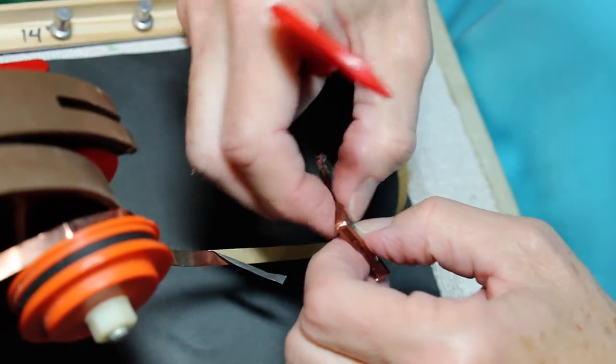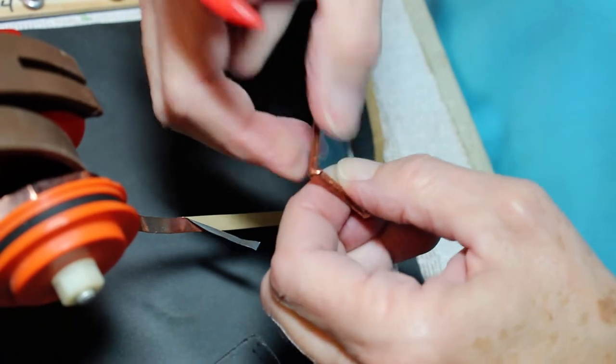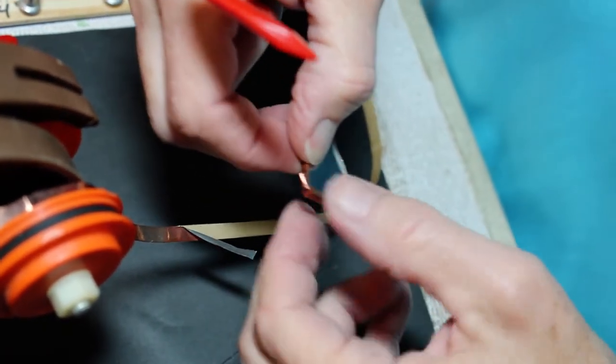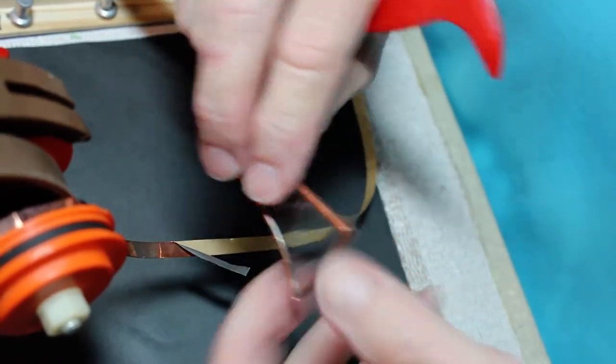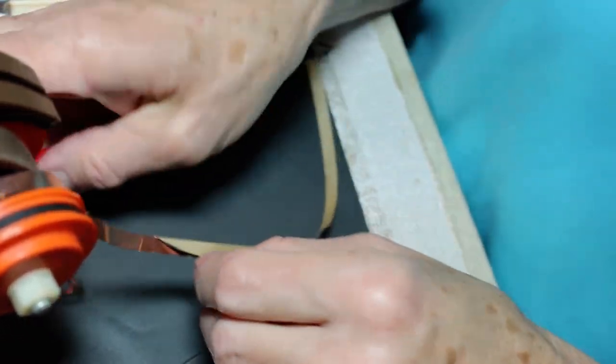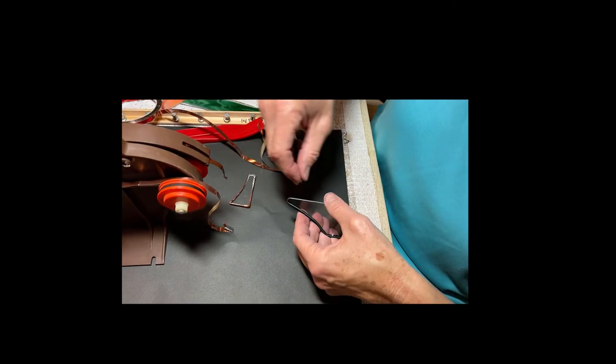I'm going to actually fix this because that would make me crazy. You can also take an exacto knife and come along here and trim off some of this. Let's do one more piece. This is the black backed copper foil.